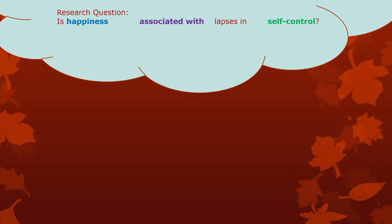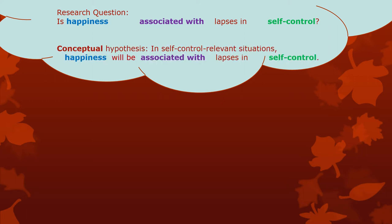So let's go to conceptual land, which I always draw as a cloud. From a particular theory, we get this research question: happiness might be associated with lapses in self-control. That's extremely general. What do you mean happiness? How do you measure or define it? What do you mean associated with? What do you mean a lapse in self-control? You might come up with a hypothesis that's a little more specific, but if you express it using those same terms, you still have an extremely general conceptual statement. You also have this new general thing — self-control relevant situations — and there's any number of those.